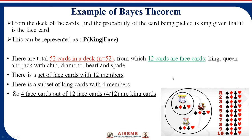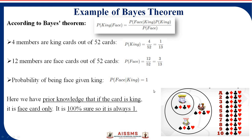So the scenario is: when you pick a king card, what is the probability? We put all these values into the Bayes' theorem formula: probability of king given face equals probability of face given king, times probability of king, divided by probability of face. Here A is king and B is face, and all values are substituted into the formula.